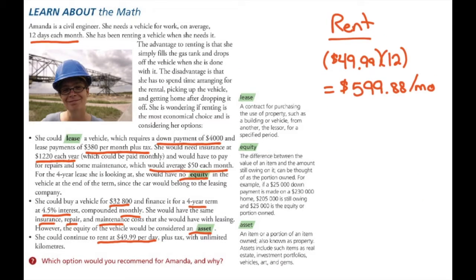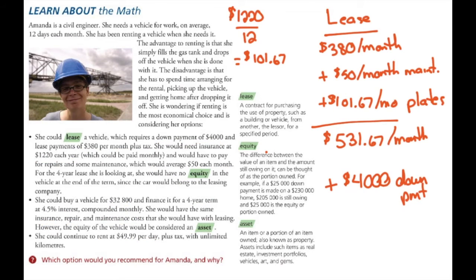I'm just going to flip back to the rent. So if she rents it, she's looking at about $600 per month. If she leases it, about $530 per month. So it is a monthly savings for her. But the downside to the lease is she does have to have $4,000 in her account right now.